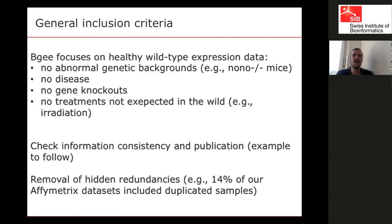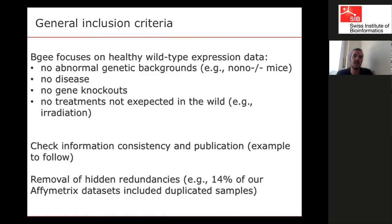We also do something unusual for a primary repository: we remove hidden redundancy. In our Affymetrix datasets, we identified that as much as 14% of the samples were duplicated — meaning a sample was reused in different experiments, or an experiment was fully duplicated as part of another. We developed methods to identify and remove these redundant data points, so we don't count the same information twice.